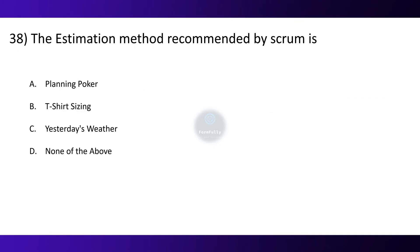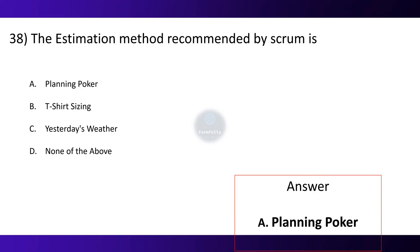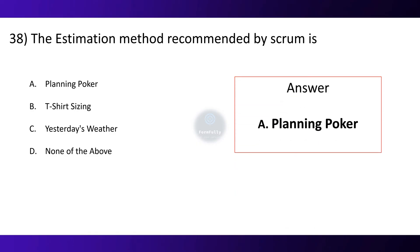Question 38. The estimation method recommended by Scrum is: Option A: Planning Poker. Option B: T-shirt Sizing. Option C: Yesterday's Weather. Option D: None of the above. The correct option is A, Planning Poker.